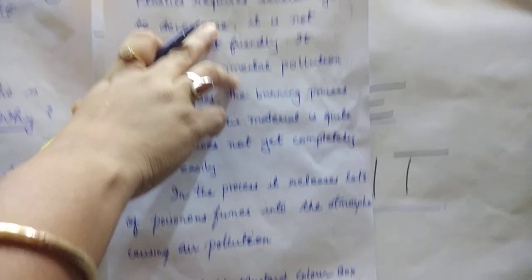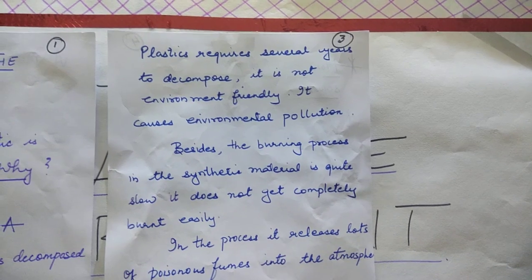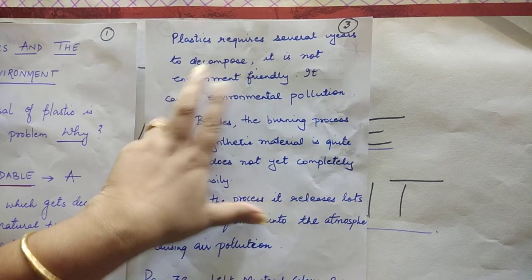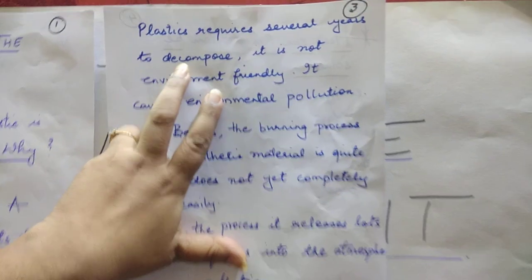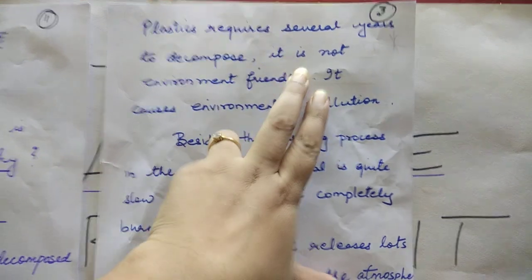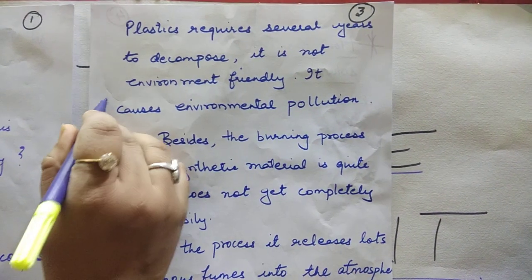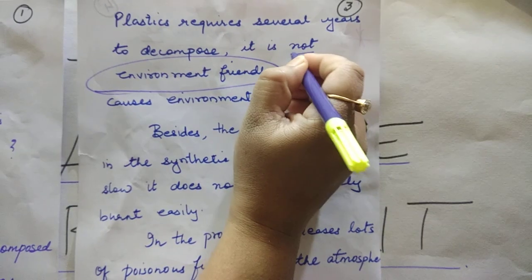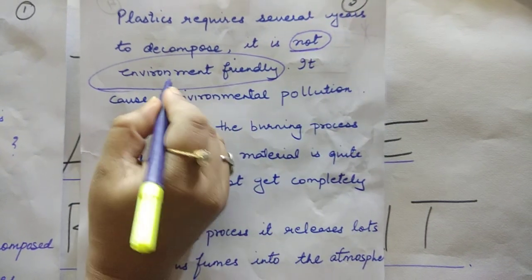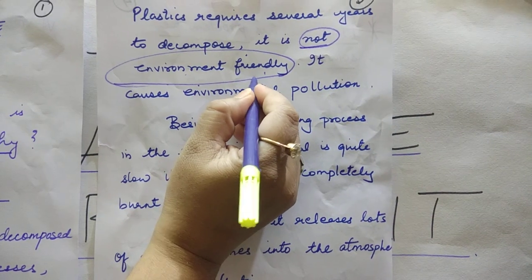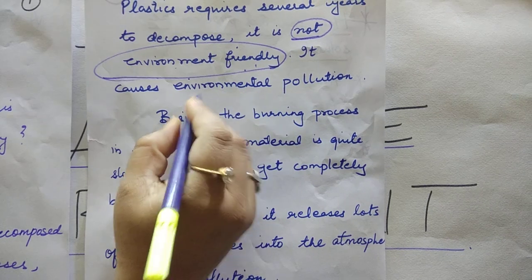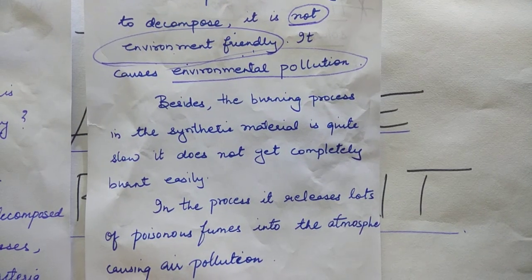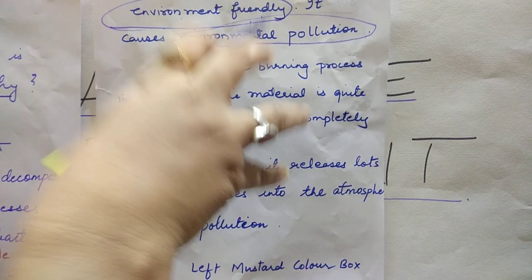Plastic requires several years to decompose, and even if it does decompose, it will not fully break down into simple pieces. So we consider plastic as not environment friendly. Since it is not environment friendly, the conclusion is that plastic causes environmental pollution.